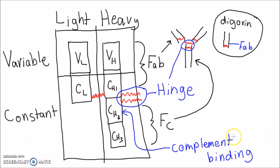Now let's discuss the different isotypes of immunoglobulins. There are five types: IgG, IgE, IgD, IgM, and IgA.